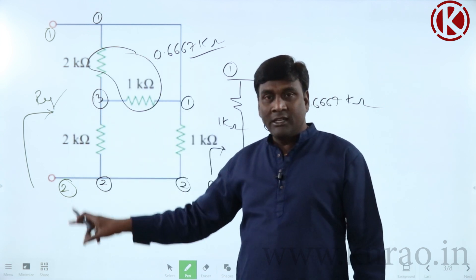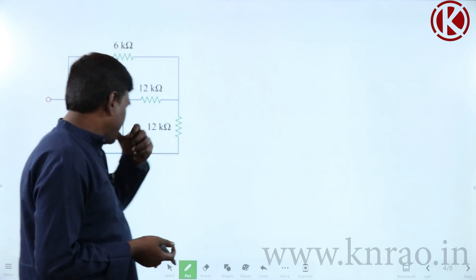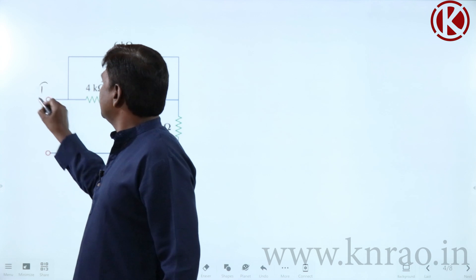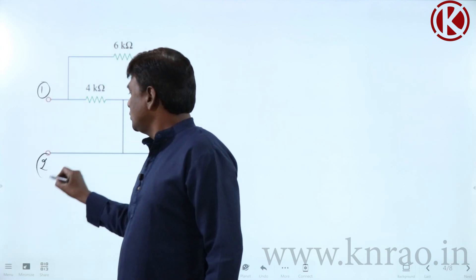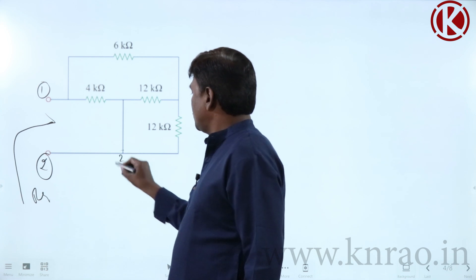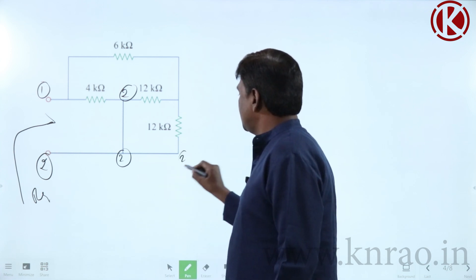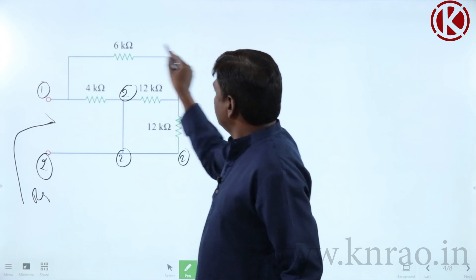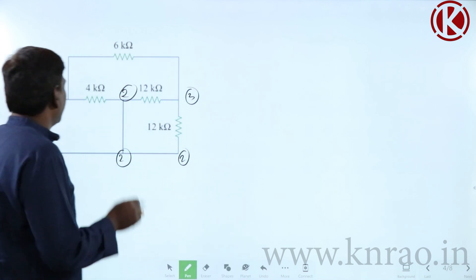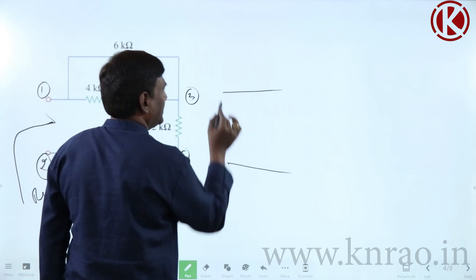Stop the video, take this network, try it yourself, then watch the remaining solution. Now for this problem: same strategy — long short-circuit paths. Node 1 and node 2 are the terminals. The intermediate node is neither 1 nor 2, so label it node 3.